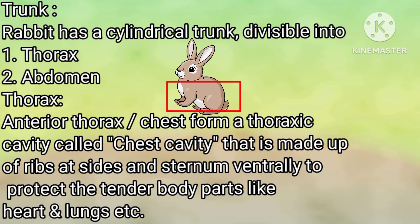Trunk: Rabbit has a cylindrical trunk divisible into thorax and abdomen. Thorax: The anterior thorax or chest forms a thoracic cavity made up of ribs at the sides and sternum ventrally, to protect the tender body parts like heart and lungs.